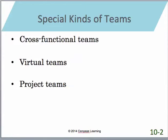The book also discusses some different kinds of special teams, such as cross-functional teams, virtual teams, and project teams. A cross-functional team consists of individuals from different areas of the firm — team members are composed from different employees from differing areas of the organization, and there can be extreme benefit to this.